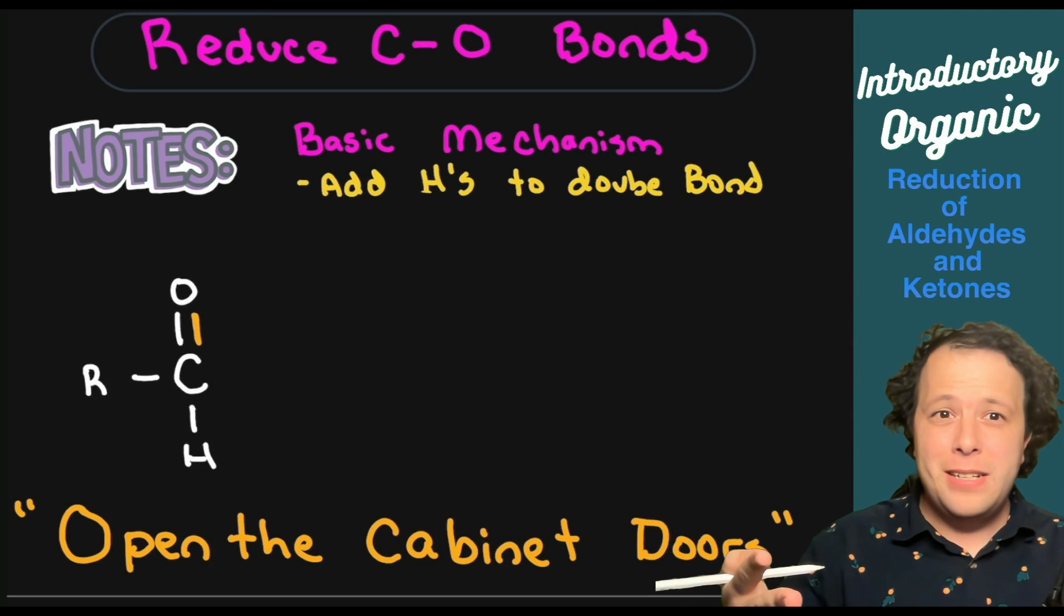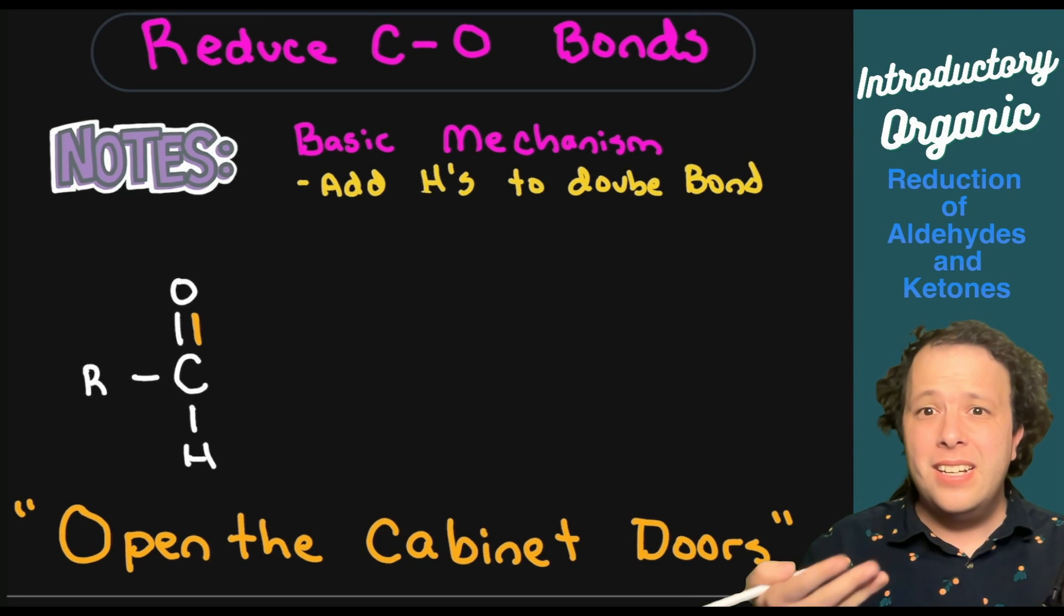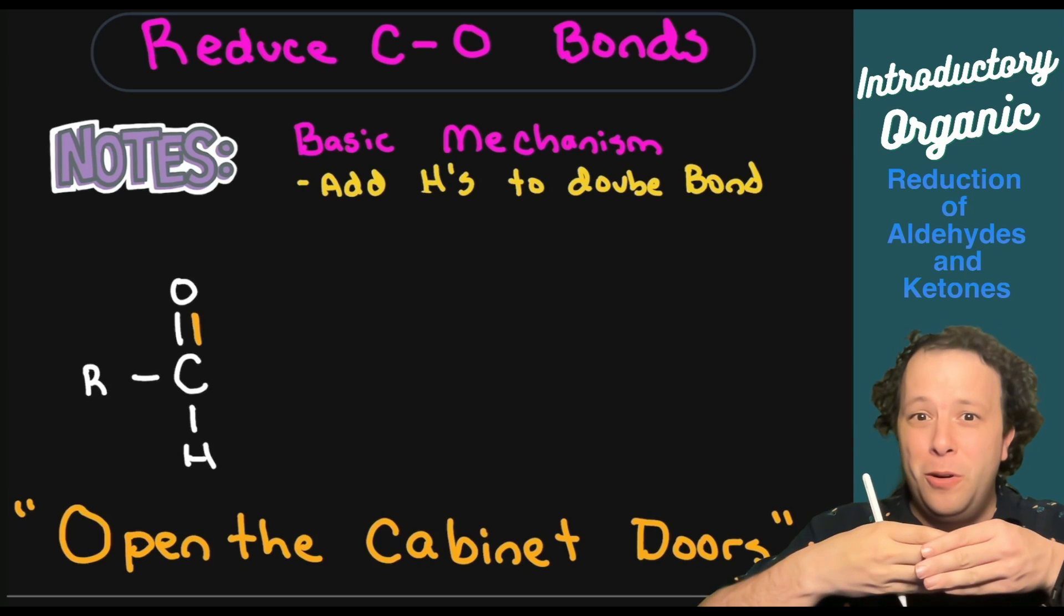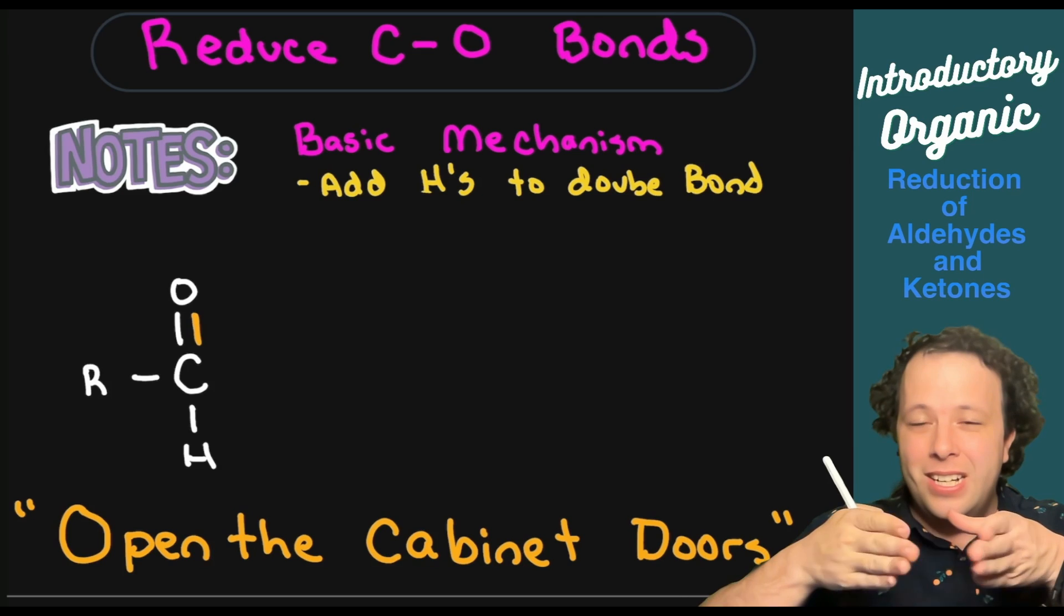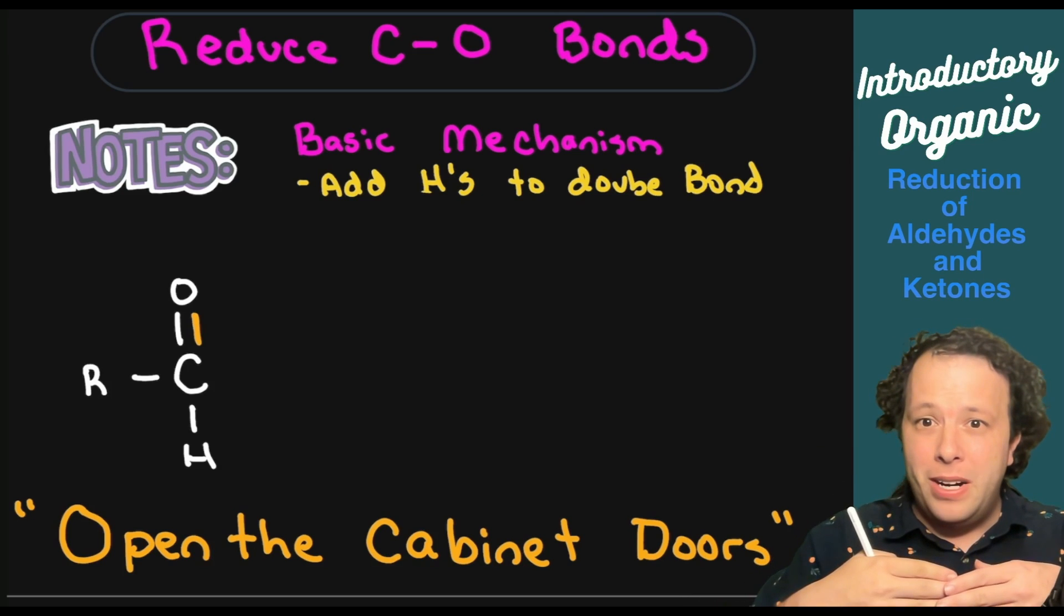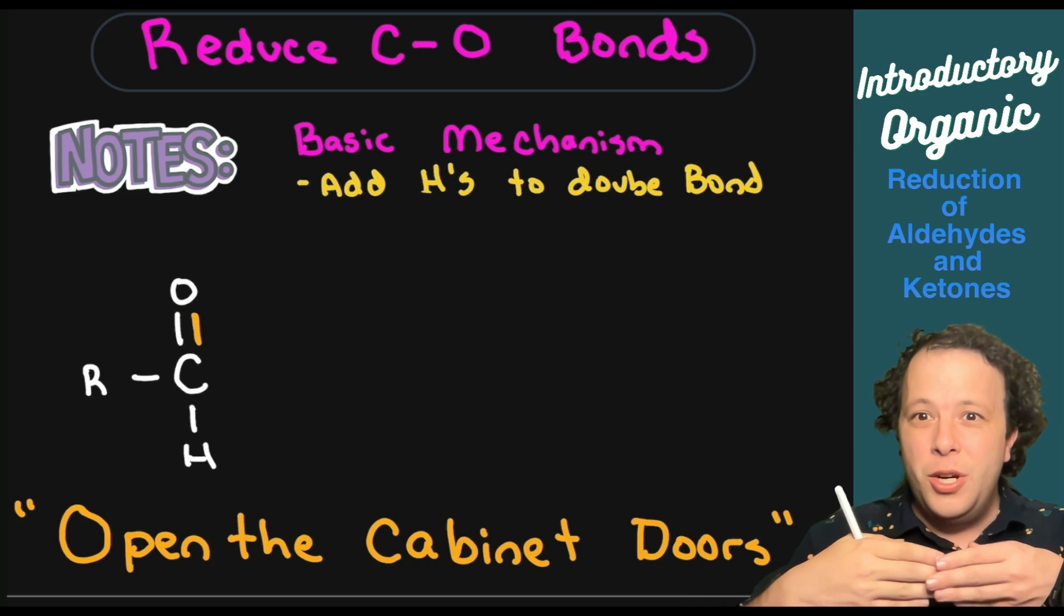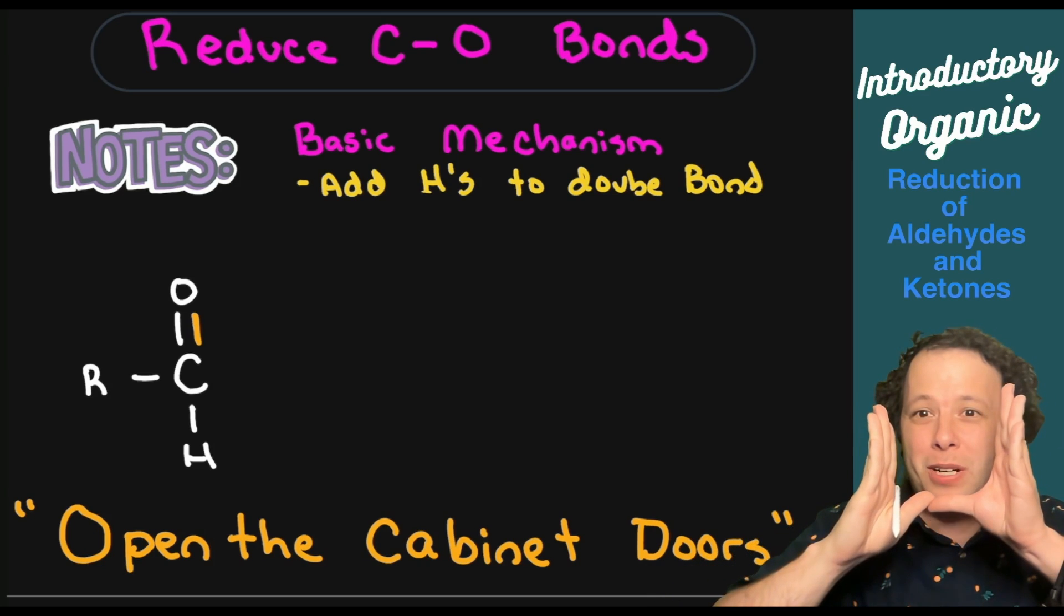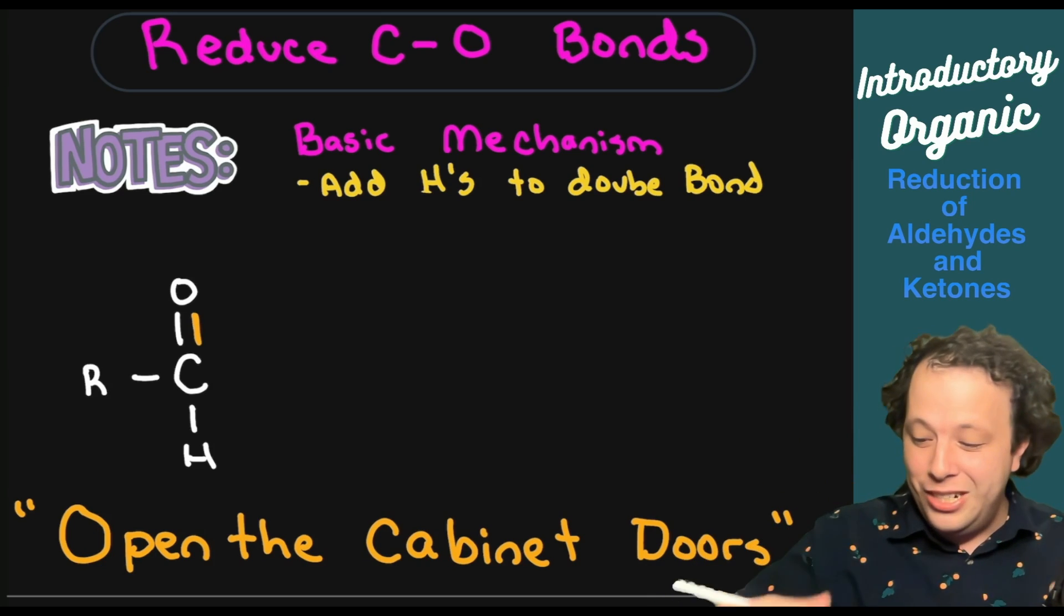The basic mechanism is just like this. It's similar to an addition reaction where if you remember from that previous video it was all about trying to open up our double doors. If I have a C double bond O, we're going to be opening it up just like a little cabinet.